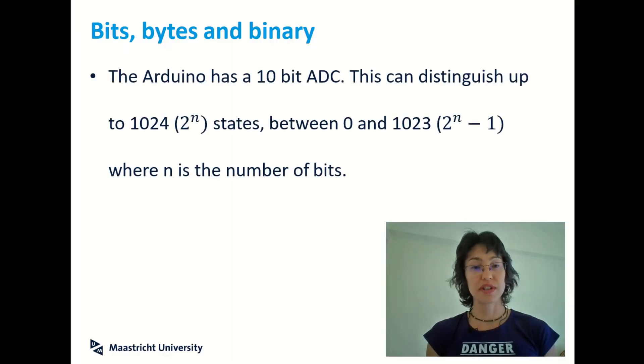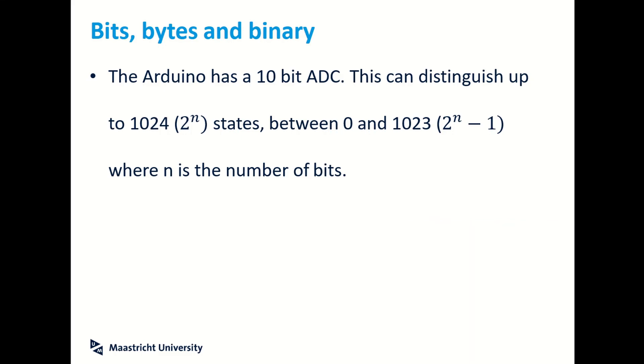If we look at an Arduino, for instance, we have a 10-bit analog-to-digital converter. So 10-bit, so n is equal to 10, so we know that we can distinguish 1024 states between 0 and 1023. The Arduino we tend to use between 0 and 5 volts, so what is the voltage resolution? Well, we can calculate that by doing 5 divided by 1023, which gives us 4.9 millivolts. So that's the value that it can distinguish between.